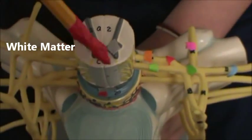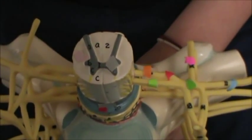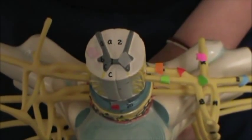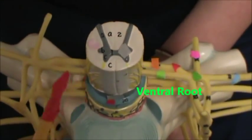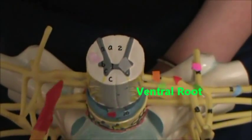And then down here we're going to identify the different roots. So in light green, we have a ventral root. And then it's a mirror image on the other side. So this is a ventral root also.